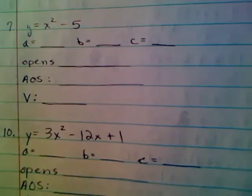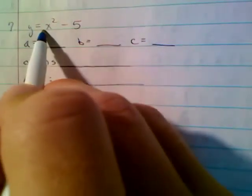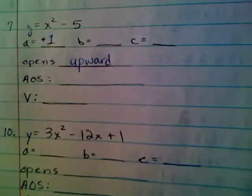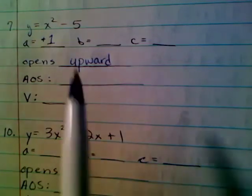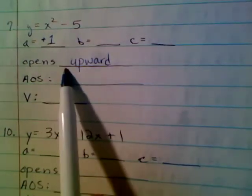The only information that I need is the A value. The A value is the number out in front of the x squared term. The A value is positive 1. Since it is positive, it opens upward. That's the only information you needed to tell which direction it opens.